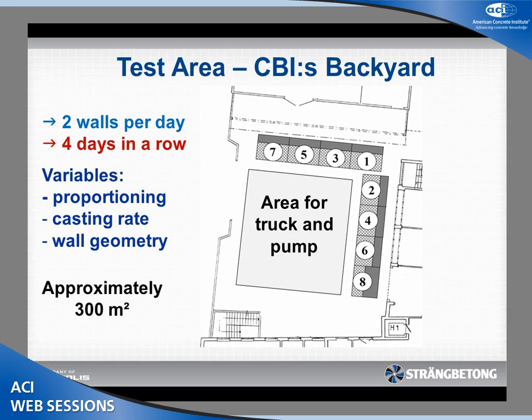We planned to cast in total eight walls — two per day in four days in a row. The variables were different mix designs, casting rate, and wall geometry. As a researcher you wish to vary everything: formwork stiffness, casting method — but how do you evaluate that if you vary everything all the time? So we limited the variations to just those parameters.